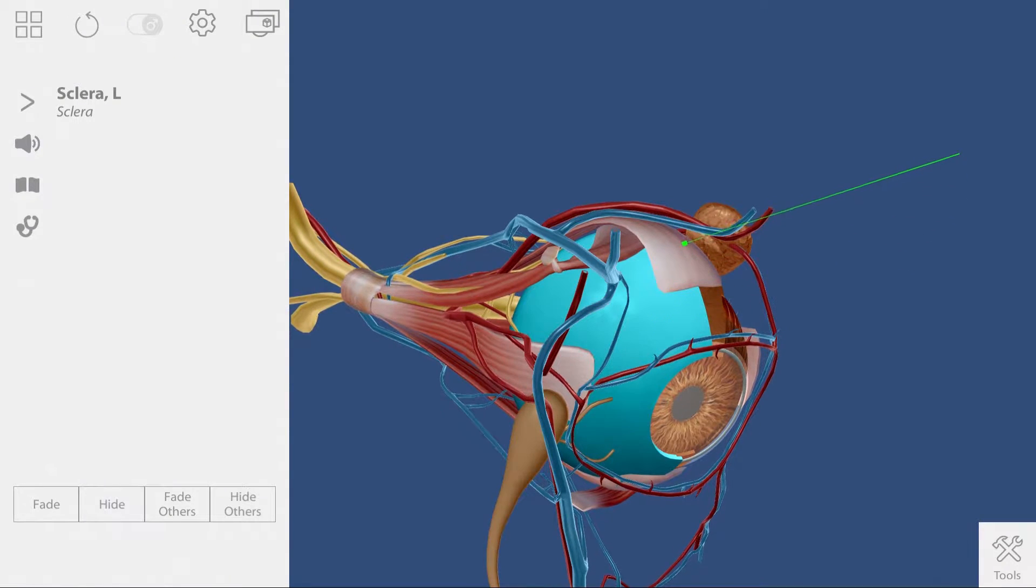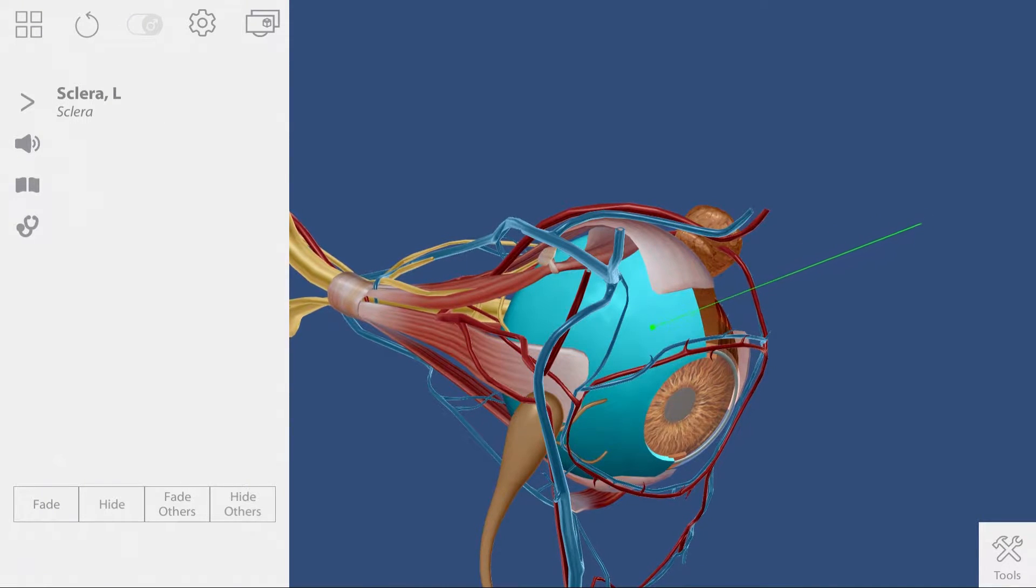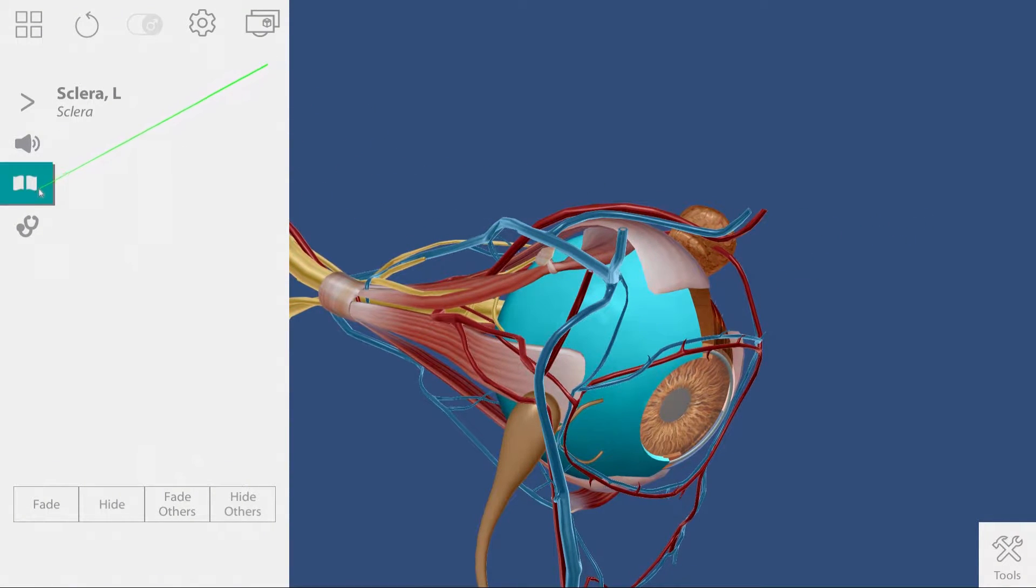Highlight the sclera and point out that it serves as an attachment site for muscles that move the eye. In order to gain a deeper understanding of the sclera, select its definition.